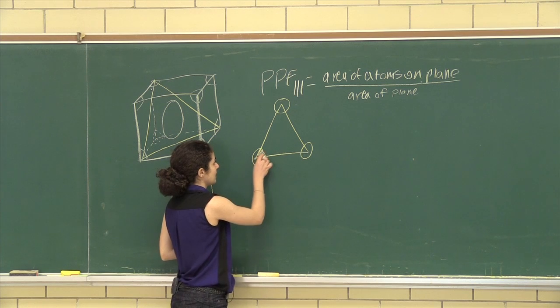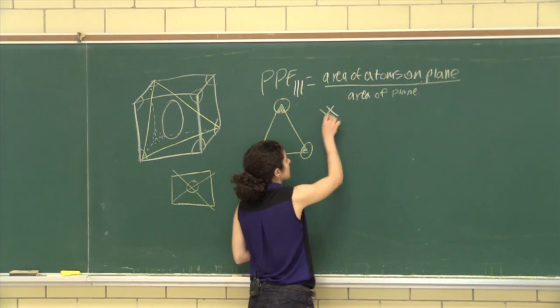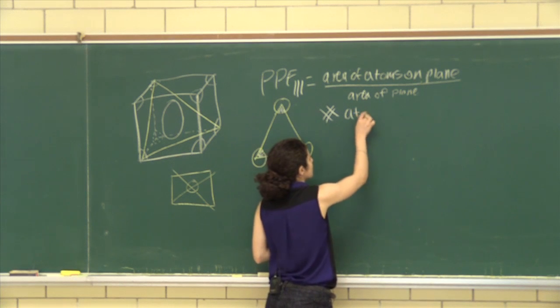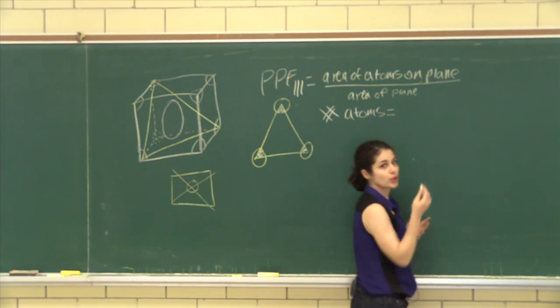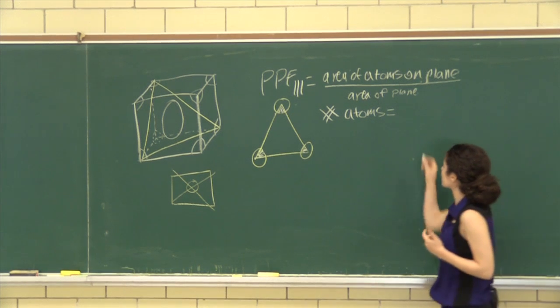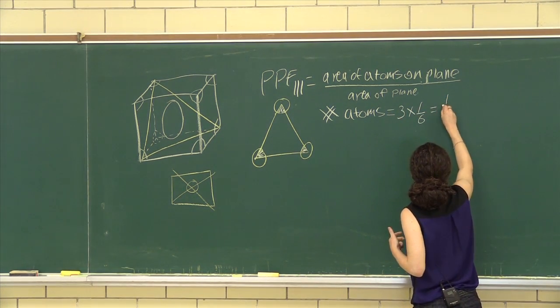Now what's in here is a sixth. So let's count the number of atoms, which is just 3 times 1 sixth, which is only half of an atom.